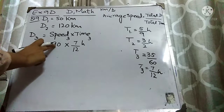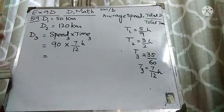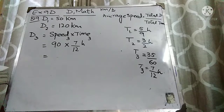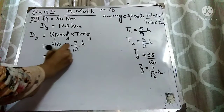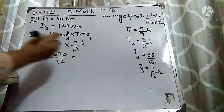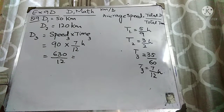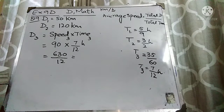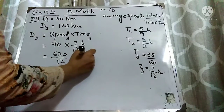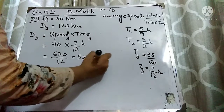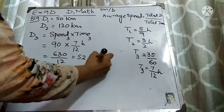When we solve it, 90 multiplied by 7 gives 630, and dividing 630 by 12 gives 52 and 1/2. So Distance 3 is 52.5 kilometers.